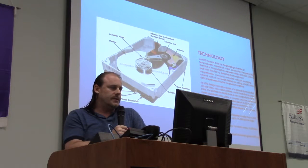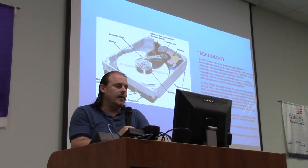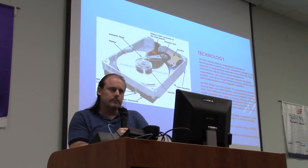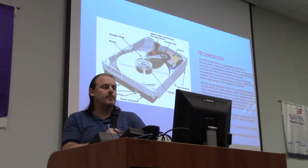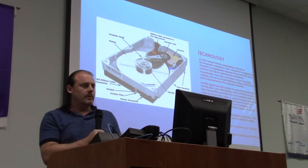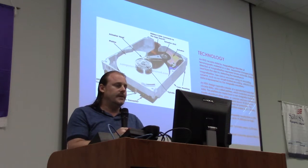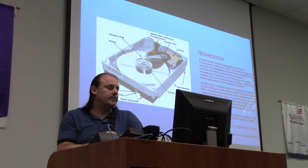Hard drive design typically consists of a spindle that holds flat circular disks, also called platters, which hold recorded data. The platters are made from a non-magnetic material, mostly aluminum alloy, glass or ceramic, and are coated with a shallow layer of magnetic material about 10 to 20 millimeters in depth, with an outer layer of carbon for protection. Platters in hard drives are spun at speeds varying from 4,200 RPMs for energy efficient drives up to 15,000 RPMs for high performance servers. The first hard disk drive spun at 1,200 RPMs.